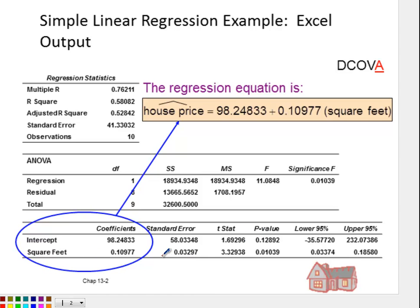You're going to do it for the second line, which is the square feet. This is your independent variable. And you're going to take 0.10977 and divide it by 0.03297. This is how you get the TSTAT.